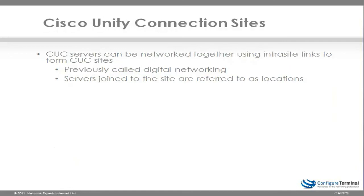On version 7.x, the term digital networking was used logically in the same way as it was used in Cisco Unity. However, in version 8, things have changed. We now have the concept of Cisco Unity Connection Sites. Cisco Unity Connection servers can be networked together using what are called intra-site links to form Cisco Unity Connection Sites — this was previously called digital networking. Servers joined to the site are referred to by their locations. When a server is added to the digital network, a connection location is automatically created for the server or the cluster on all other locations in the site, and these locations begin to perform directory synchronization.